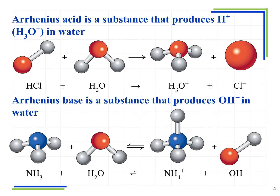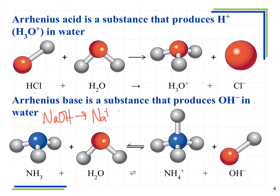Let's look at the definition of an Arrhenius acid and base. Here we have HCl plus H2O going to H3O+ and Cl-. An Arrhenius acid produces H+ — which really means H3O+ — in water. An Arrhenius base produces OH- in water. For example, NaOH dissociates into Na+ plus OH-. Both producing OH- in solution classifies a substance as an Arrhenius base.